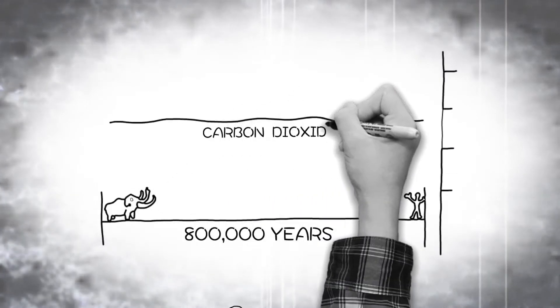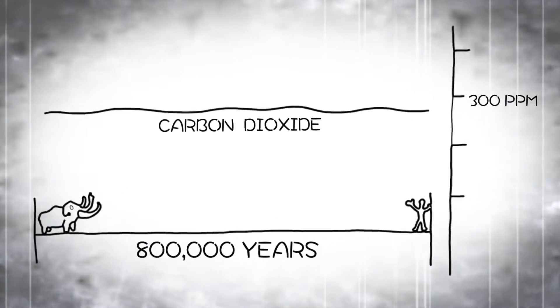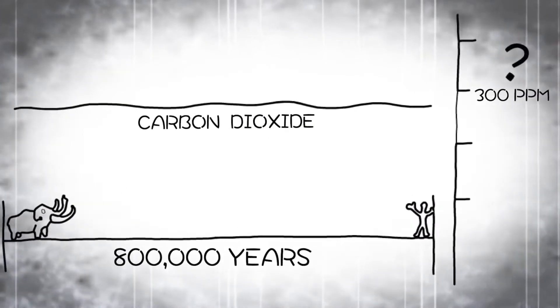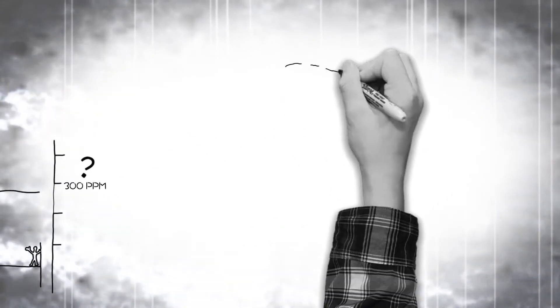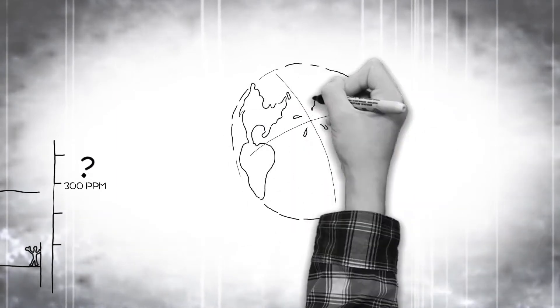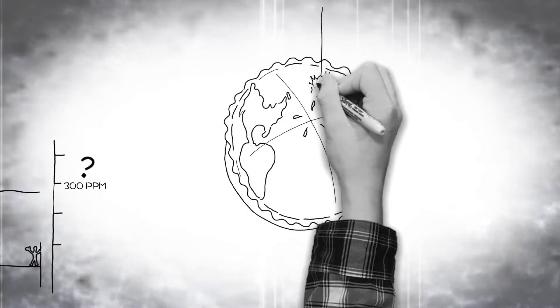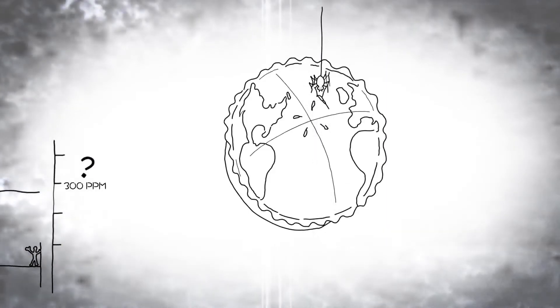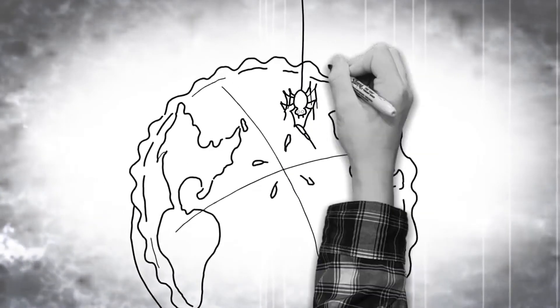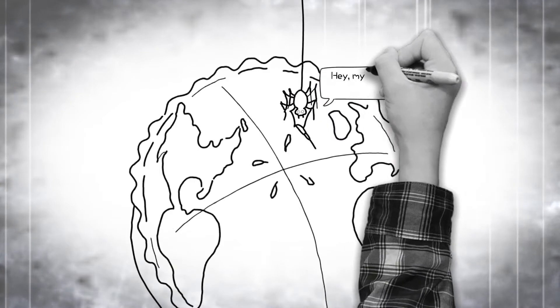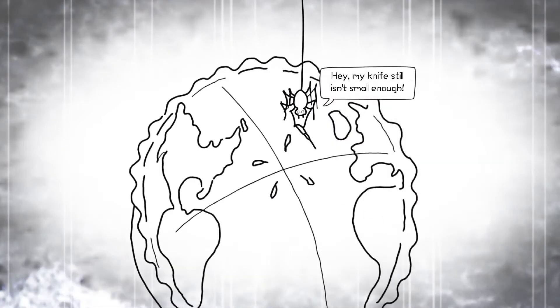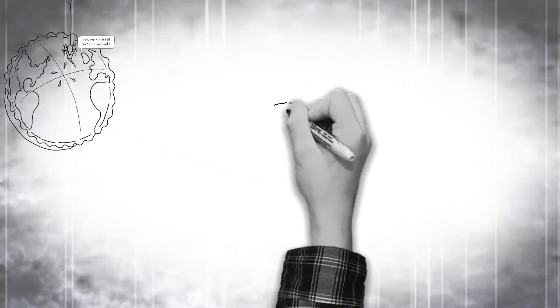For the past 800,000 years, carbon dioxide never rose above 300 parts per million. That little fraction's hard to fathom. If you tried to slice it from the atmospheric pie surrounding Earth, you'd need a knife finer than a spider web to extract that itty-bitty sliver from the entire atmosphere. Being so incredibly small, how much can that matter?